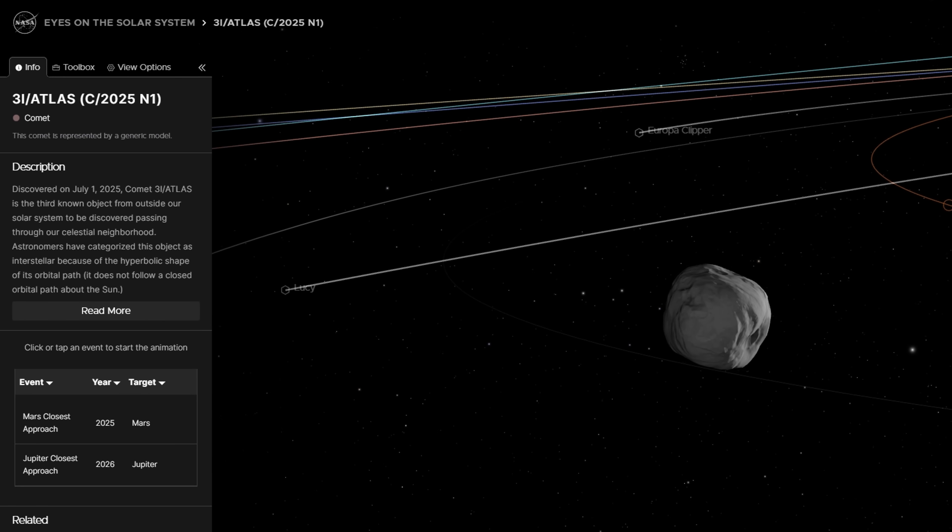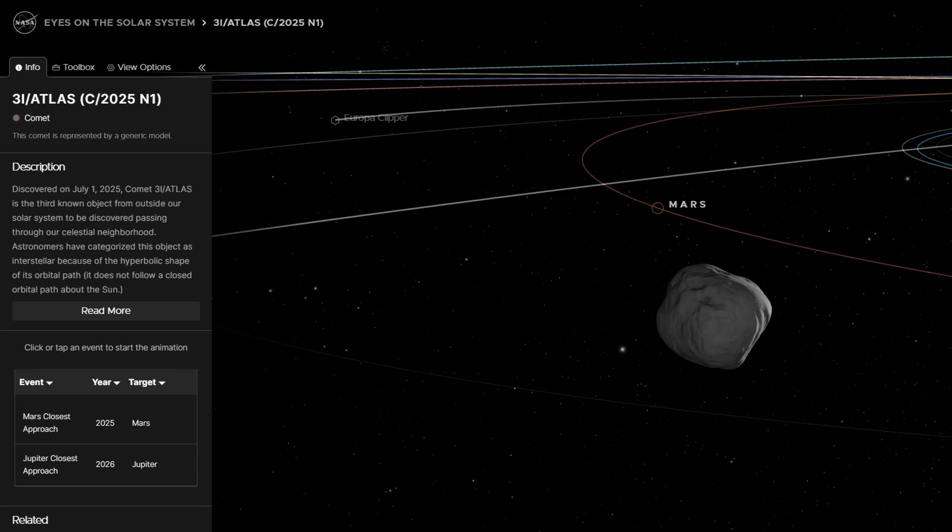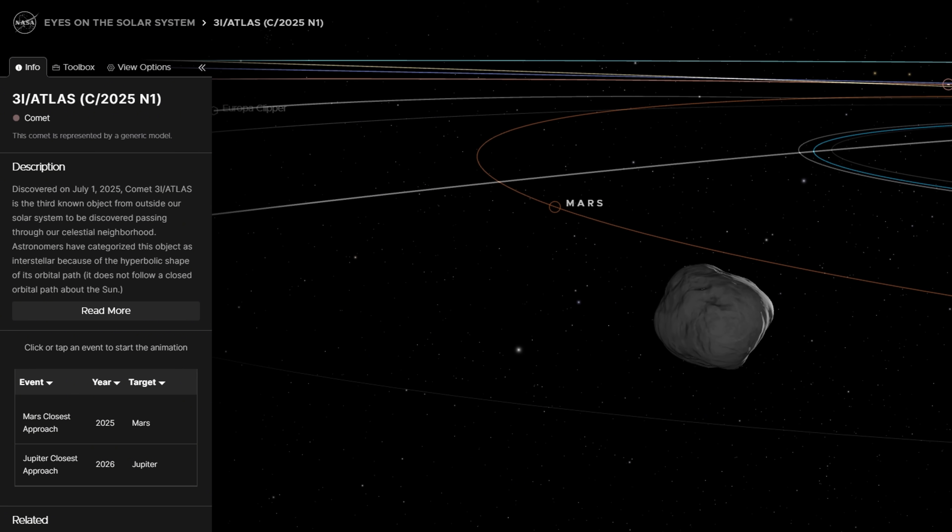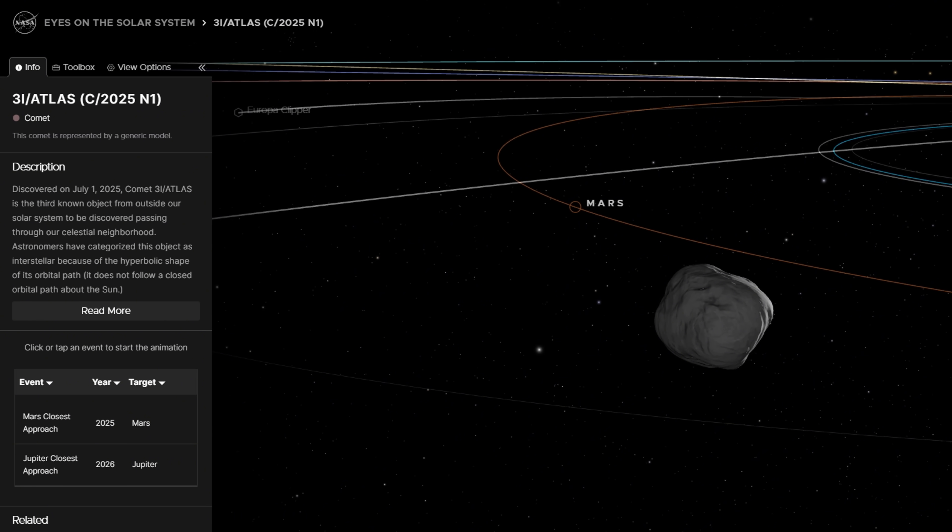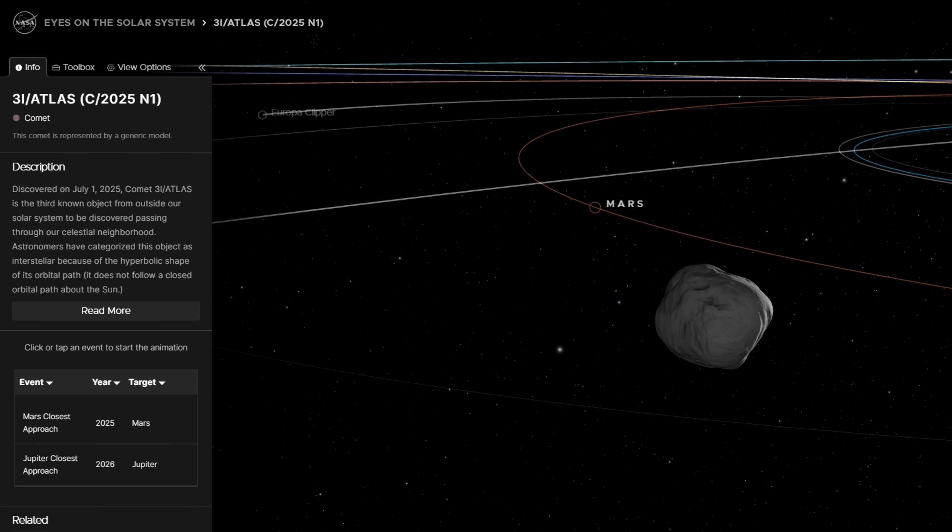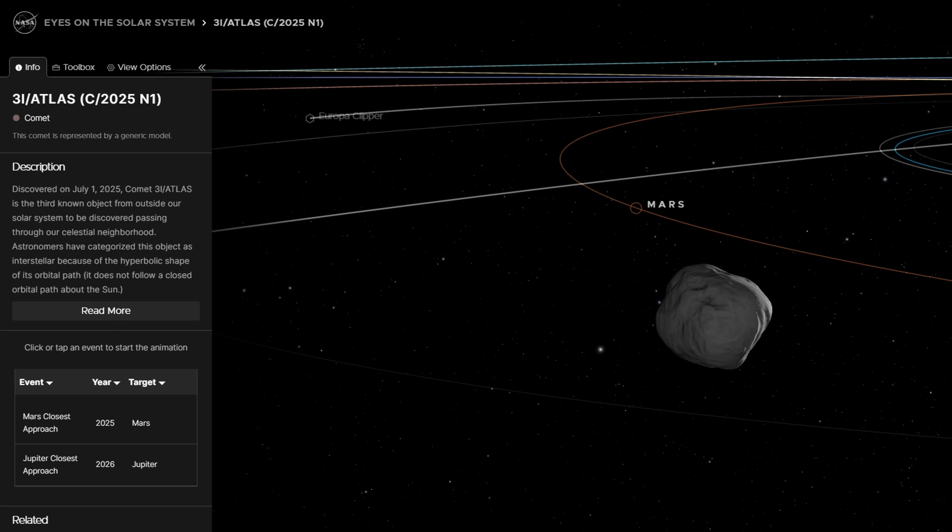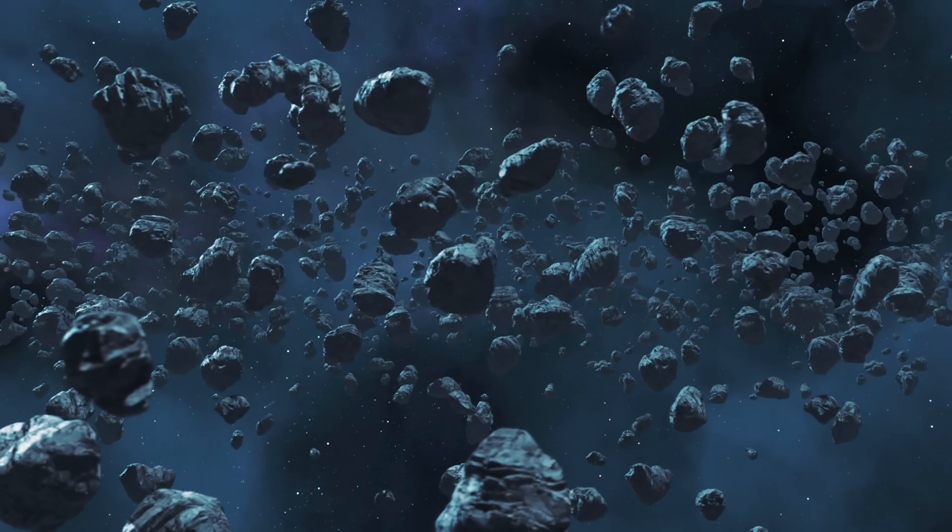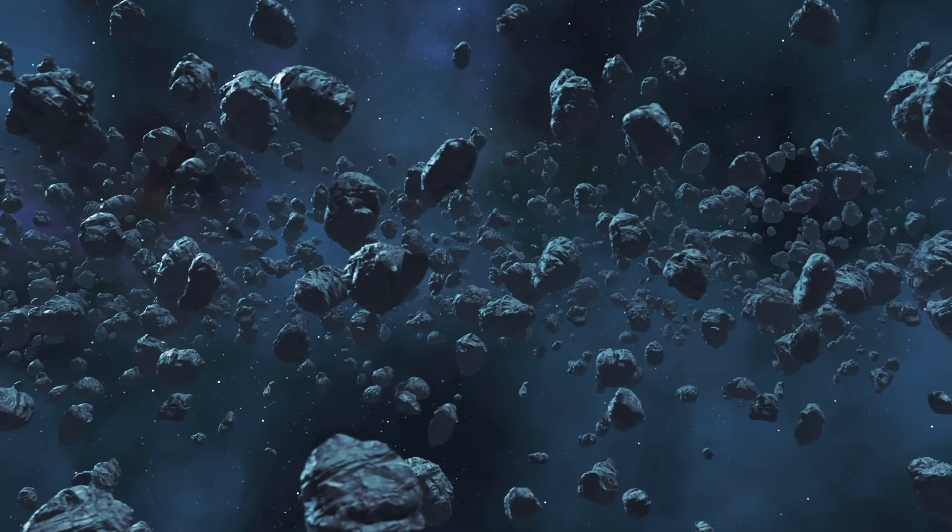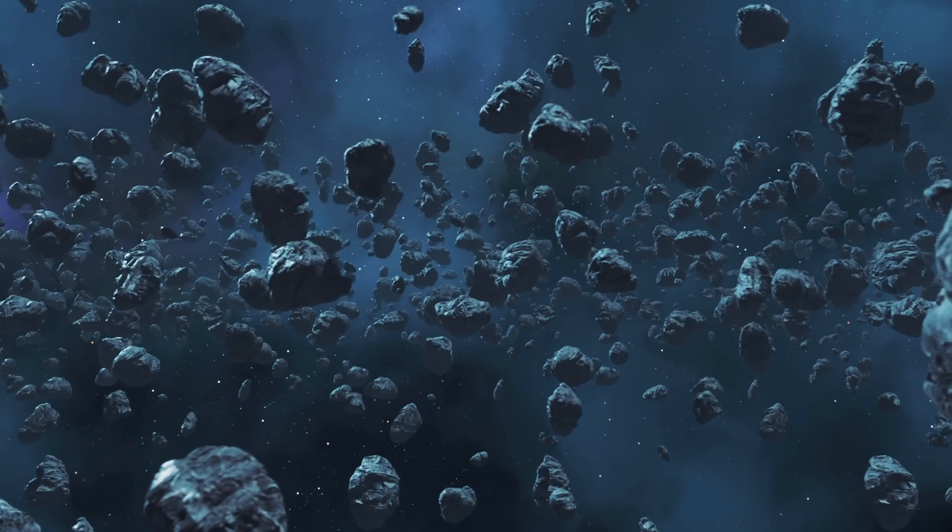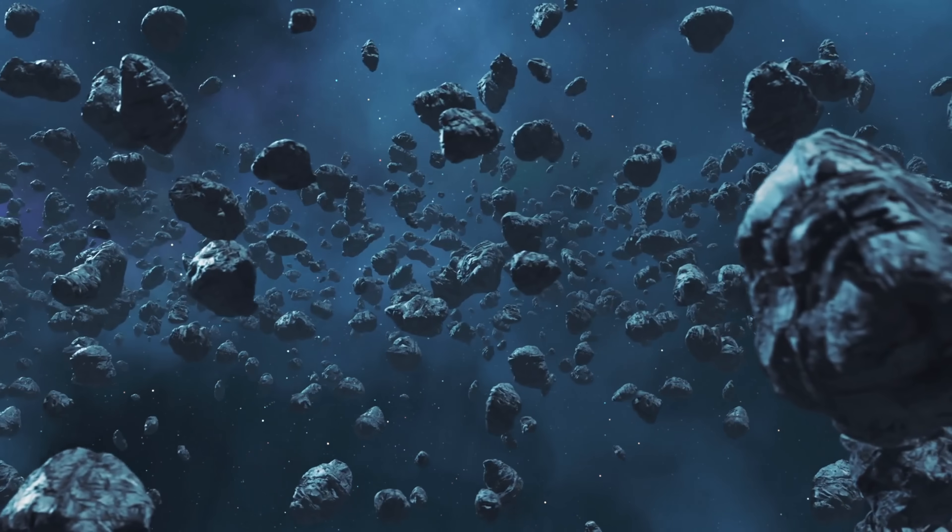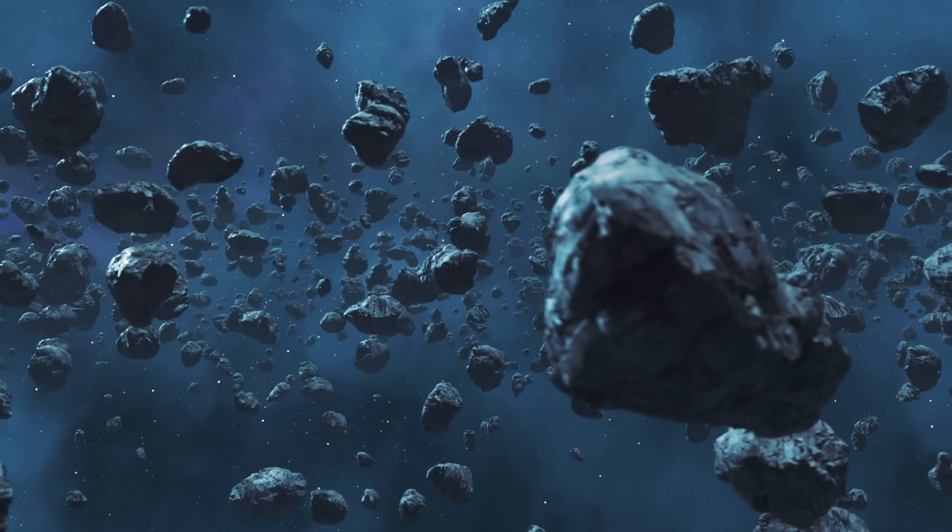Oumuamua challenged us with motion that seemed too precise and consistent to be explained by chance. 3i Atlas challenges us with stillness—a refusal to budge despite forces that ought to send it drifting across space. Both anomalies resist easy explanation within known astrophysics, and both leave open the same tantalizing possibility—that these are not mere errant rocks from distant stars, but perhaps probes, remnants or artifacts—objects shaped or engineered by intelligences unimaginably far from our own.